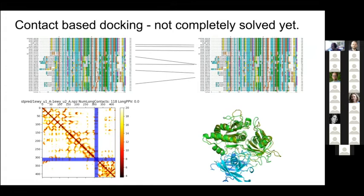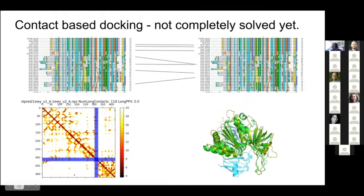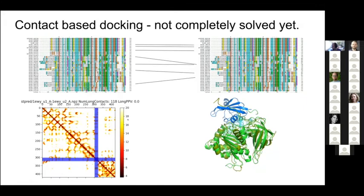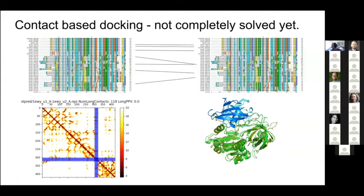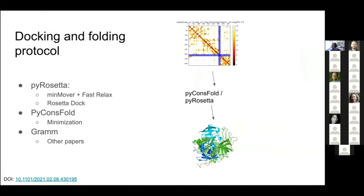You compare the native interface contacts in the upper right to the predicted interface contacts in the bottom left. In one case there are a few contacts predicted in the interface, but because PPV is zero they are all wrong — we get roughly the right interface area but completely wrong orientation of the small molecule relative to the big molecule. We then use very similar algorithms as before: we make contact maps and can use Rosetta or CNS for folding, which take a couple of hours to run.